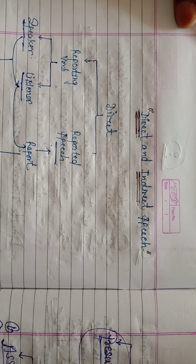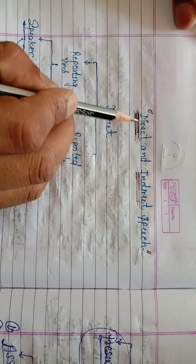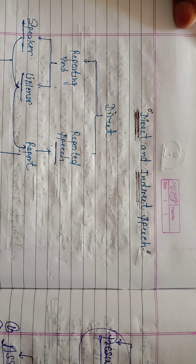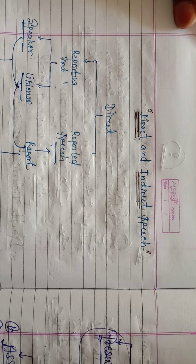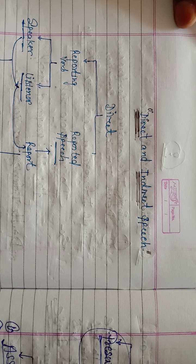First of all, we know what is direct and indirect speech. Direct means that someone has said something and we report it exactly as said. Indirect means that someone has said something and we speak it in our own words. That is called indirect speech.